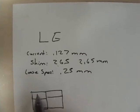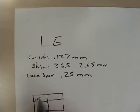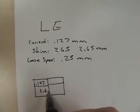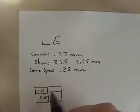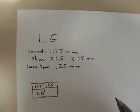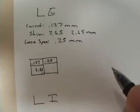You got clearance of .127mm and a 2.65 shim and you want a .25 clearance on there.